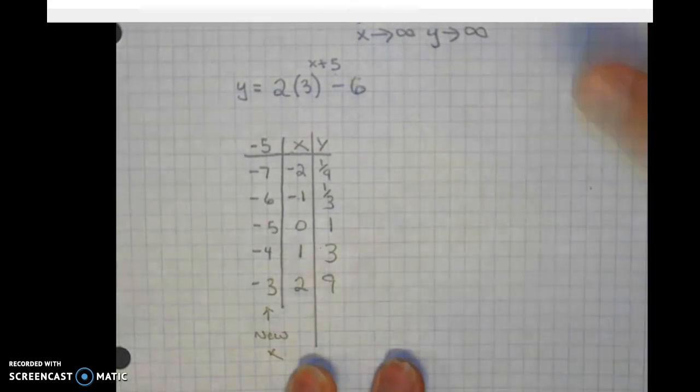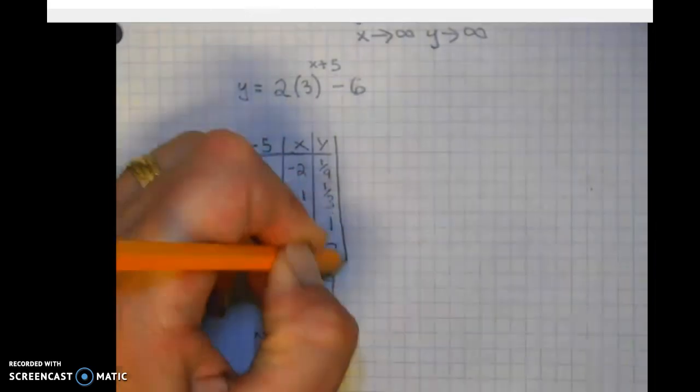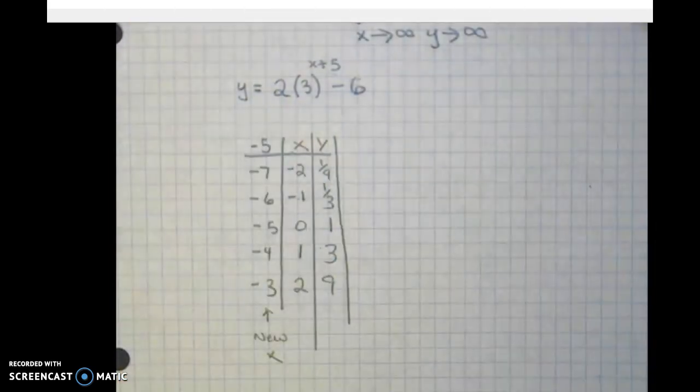So we're minus five, and two minus five. Anything else happening to x? Nope. So these are our new x values.